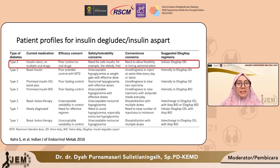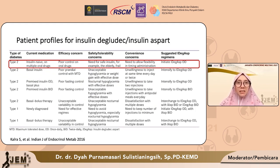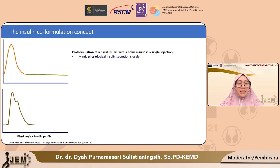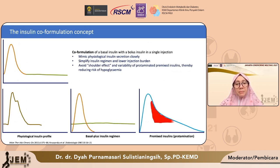Pasien ini adalah profil pasien diabetes tipe 2 yang naif injeksi yang gagal dengan OAD, dan ini merupakan salah satu jenis populasi yang memang cukup cocok diberikan insulin co-formulation atau insulin IDeg-Aspart. Untuk konsep insulin co-formulation sendiri, sebenarnya insulin ini menyerupai fisiologi insulin tubuh kita, yang terdiri dari gabungan insulin basal yang relatif flat dengan sangat minimal variasinya, dan kemudian terdapat bolus insulin untuk mengatasi lonjakan hiperglikemia postprandial. Berbeda halnya dengan insulin premix, di mana dia masih memiliki shoulder effect.